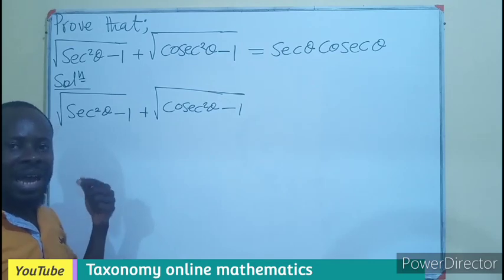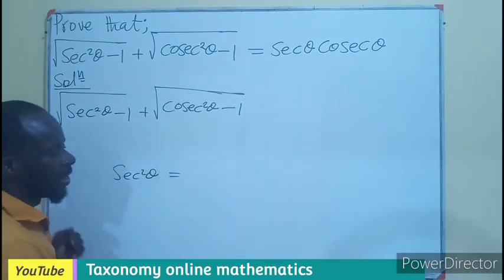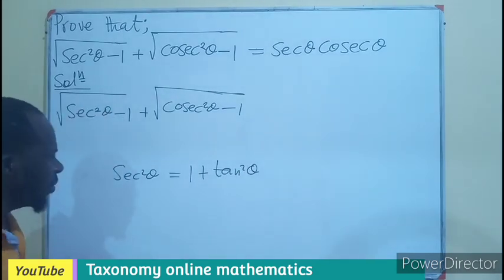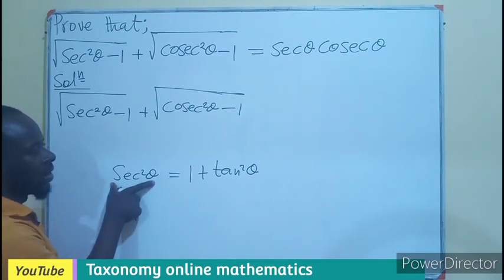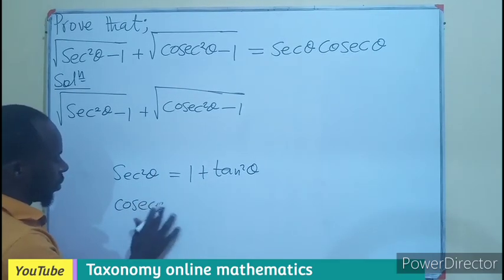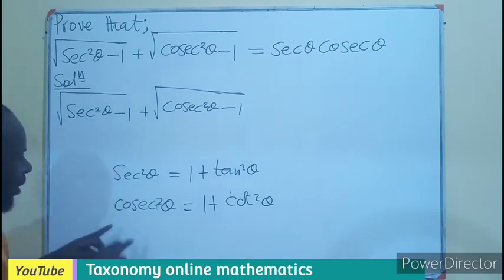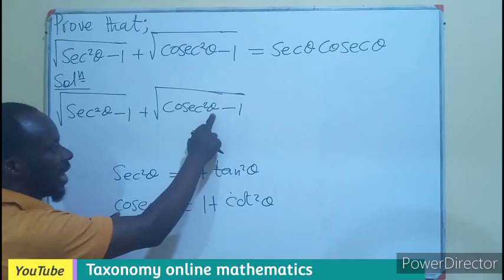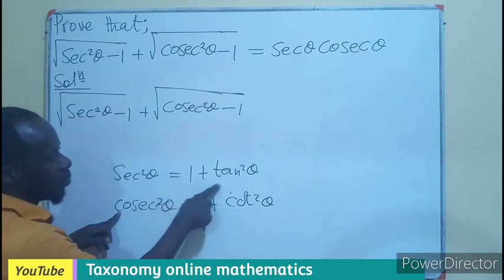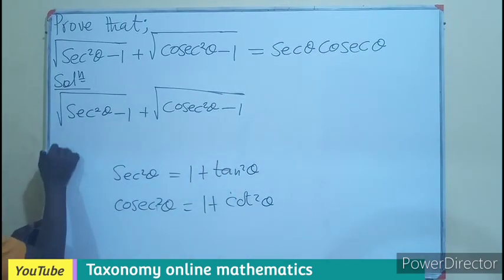Now if we are looking at the identities concerning sec, we know that sec squared theta is the same as 1 plus tan squared theta. That expression is the same as this. Then for cosec, cosec squared theta is also 1 plus cot squared theta. So I can see cosec squared theta sitting here and sec squared theta sitting here. So I will replace sec squared theta by 1 plus tan squared theta, and replace cosec squared theta by 1 plus cot squared theta, still under the square root.